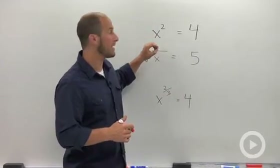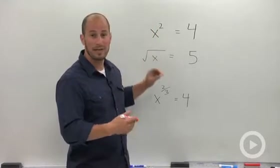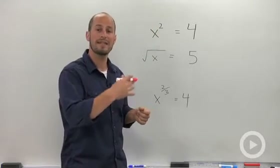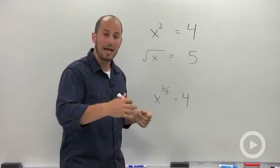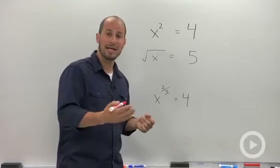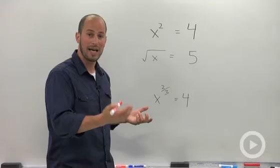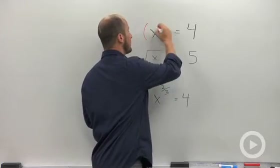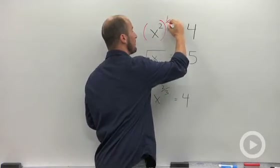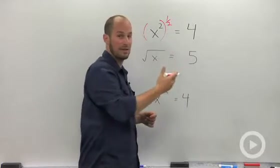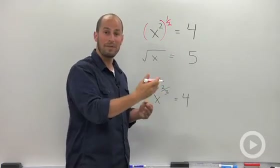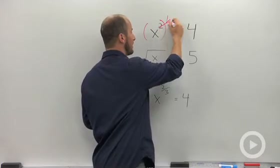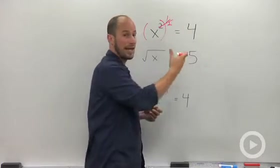What we're used to doing is we have x squared and we want to get a single x. What we end up doing is taking the square root of both sides. The square root in exponent fraction form is actually the same thing as x to the 1 half. So when we have a power to a power, what we end up doing is multiplying, and that leaves us with x to the 1st — x by itself.